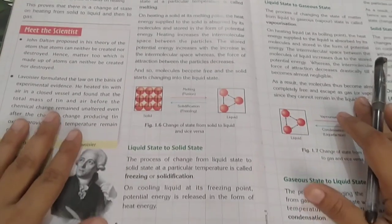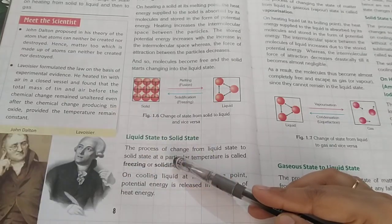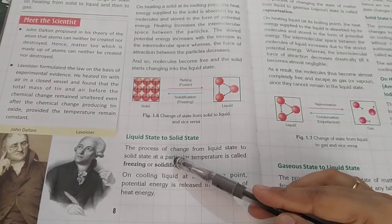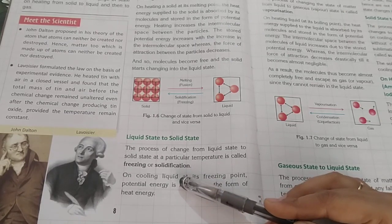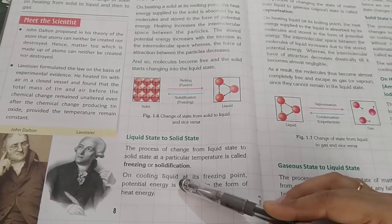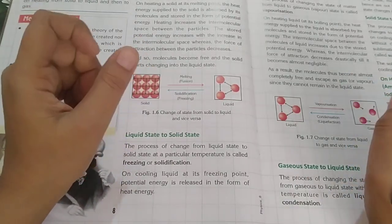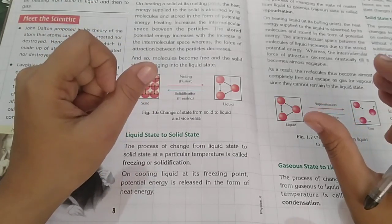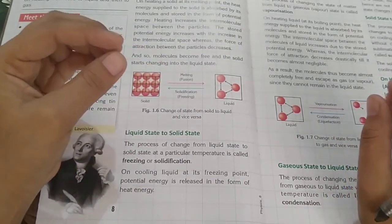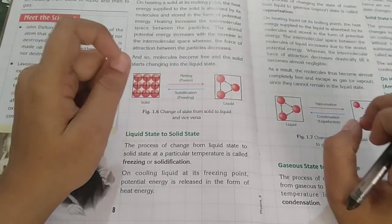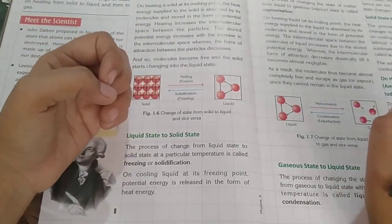Now we will see what happens in liquid state to solid state. The process of change from liquid state to solid state at a particular temperature is called freezing or solidification. For example, when you put water in a freezer, the water converts to ice. So the process of changing from liquid state to solid state at a particular temperature is called freezing or solidification.